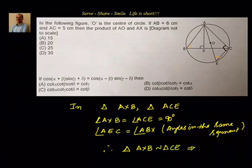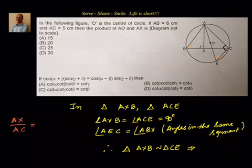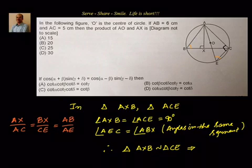Now that we know the triangles are similar, we write down the corresponding sides: AX divided by AC equals BX divided by CE equals AB divided by AE. Since two triangles are similar, corresponding angles are equal and corresponding sides are proportional.